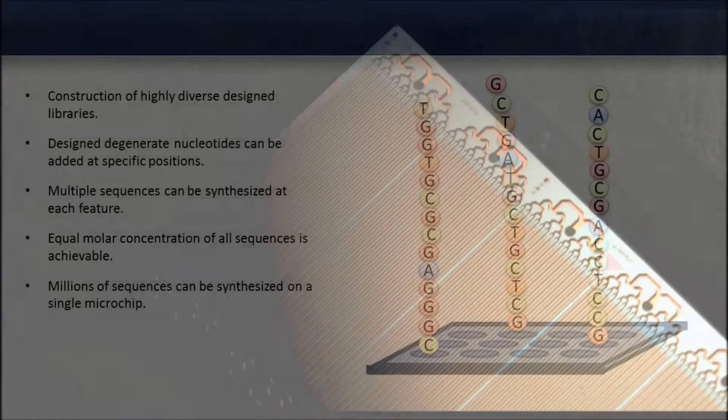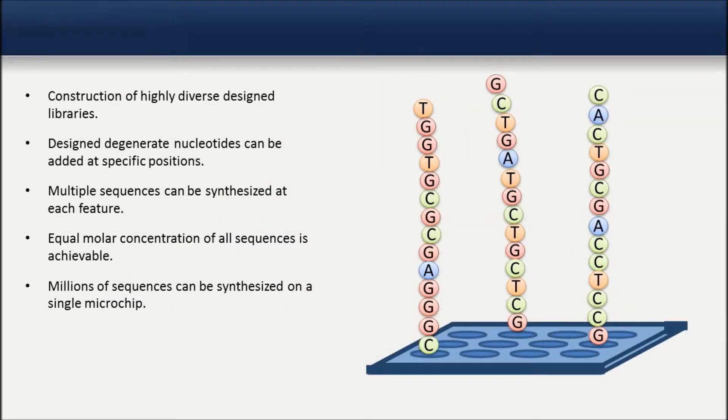For applications such as mutagenesis libraries, a much higher number of sequences may be desired. This can easily be accomplished with the use of designed degenerate nucleotides at specific positions within the sequences. See the OligoMix references for more information on this topic.